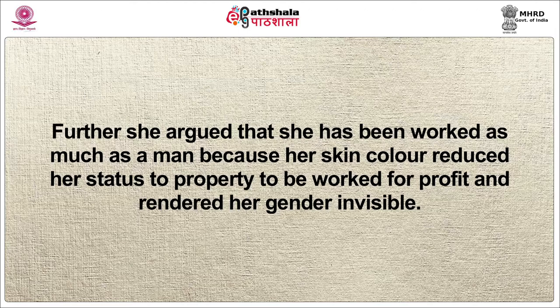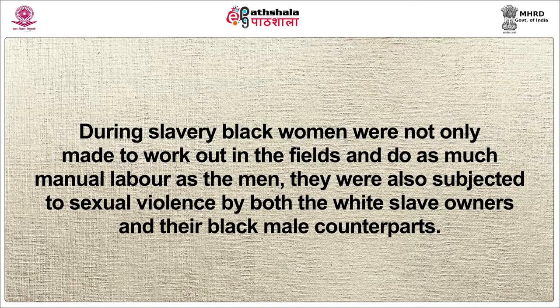Truth highlighted the specific experience of Black women in America. She claimed she bore children but that they were sold into slavery by the slave owner. She compared the treatment given to white women — where they were carried over ditches and helped into carriages — and noted that she received none of this attention because of her race. She argued that she was worked as much as a man because of her skin colour, and her reduced status to property rendered her gender invisible. During slavery, Black women were not only made to work in the fields and do as much manual labour as the men, but they were also subjected to sexual violence by both the white slave owners and their Black male counterparts.